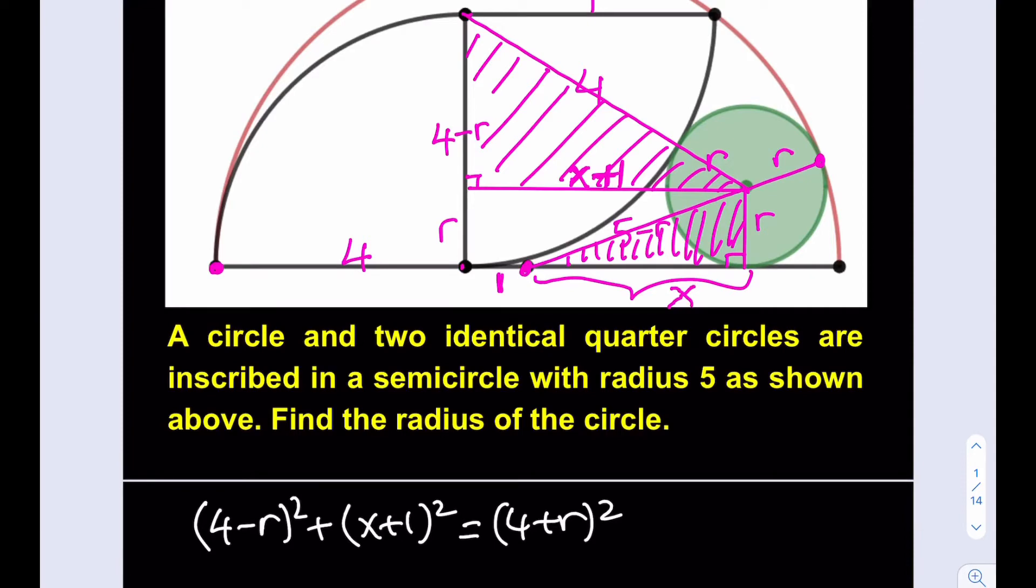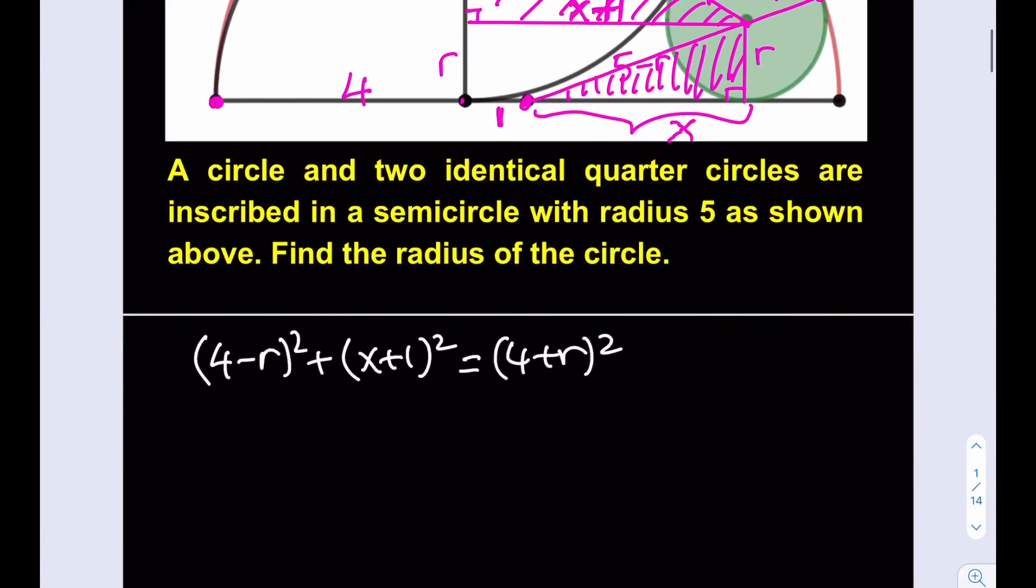Let's simplify this as much as we can. As you know, we have our famous identity. If we subtract a plus b squared minus a minus b squared, that always equals 4ab. So this is going to equal 16r, which is a very helpful identity. Let's not square both sides yet because I have to write the second equation and then I'm going to show you how I solve this system.